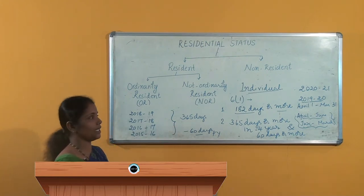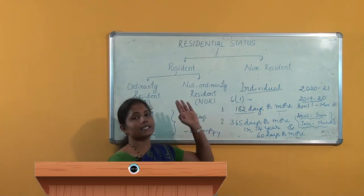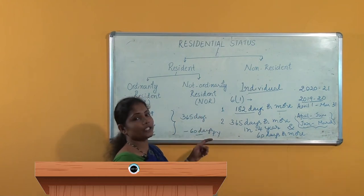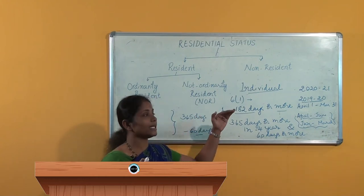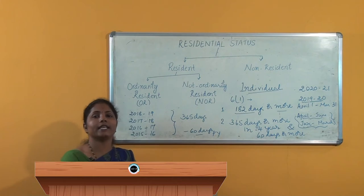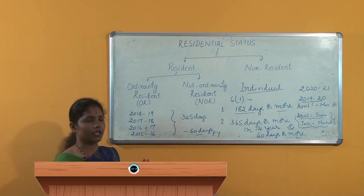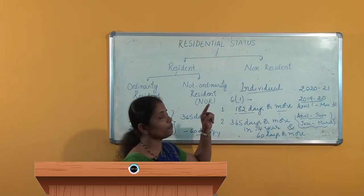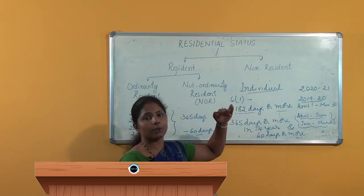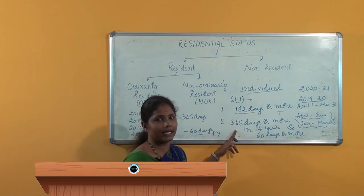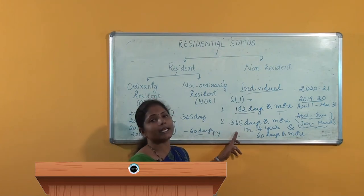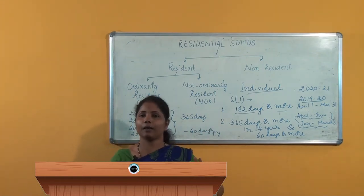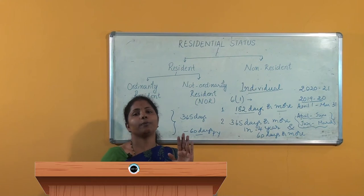So this is the second basic condition. Section 6 subsection 1 says that if an individual satisfies any one of the basic conditions, he becomes a resident of India. He has to fulfill the first condition; if he fails to fulfill it, we determine whether he satisfies the second condition. If he satisfies the second condition, then he becomes a resident. Any one of the conditions must be fulfilled to become a resident.